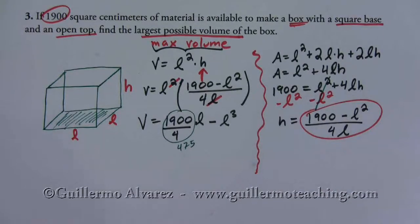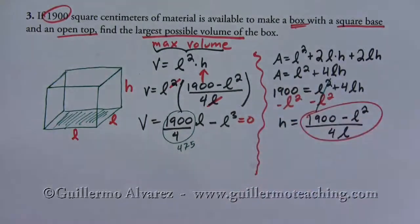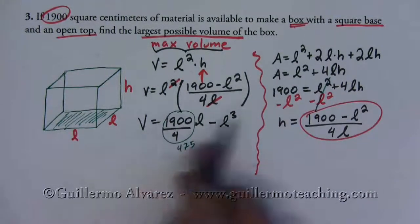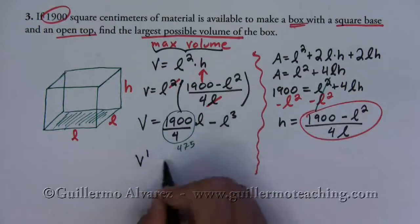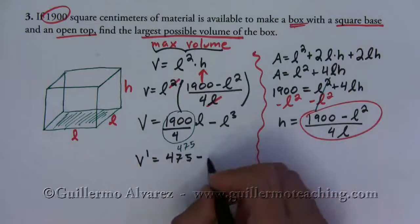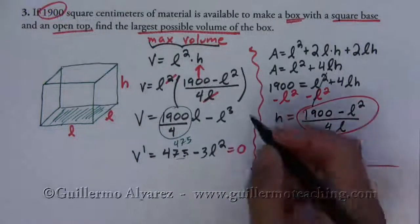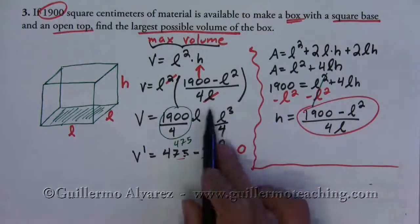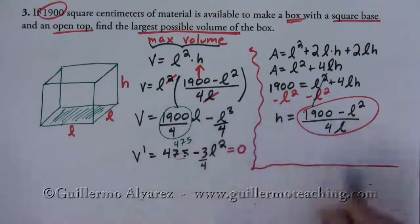And then once we have the formula for the volume we need to find the derivative. So the derivative of this guy is going to equal 475 minus 3 l squared. I forgot to divide this guy by 4 up here. So this is actually three fourths l squared.